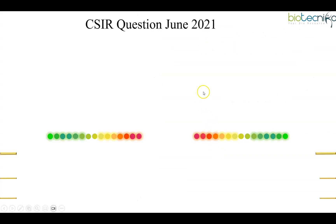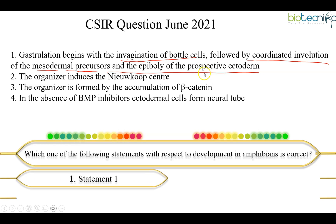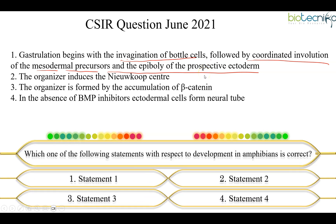The first question is from the CSIR June 2021 exam, asking about the gastrulation process and axis development. The question states: gastrulation begins with the invagination of bottle cells, followed by coordinated involution of the mesodermal precursors and the epiboly of the prospective ectoderm. We need to identify the correct statement among all the given options.